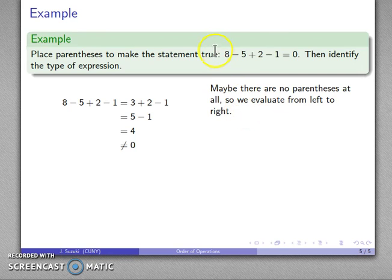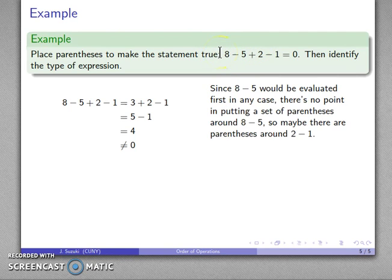The first thought may be to put parentheses around the 8 minus 5. But because I'm evaluating things from left to right, if I throw parentheses around 8 minus 5, that says to evaluate that first. But I'd evaluate that first in any case. So there's no point in putting the parentheses there.